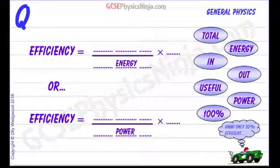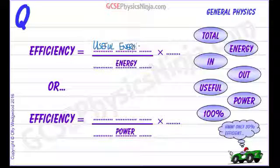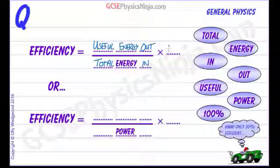So efficiency is — we've got some choices here to put in the gaps. It's the useful energy out, divided by the total energy in. If you multiply that by 100, you can then get that fraction as a percentage, and that would be our efficiency percent.